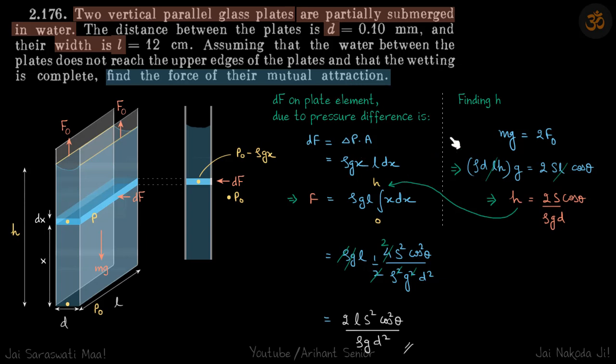But our approach in that case will also be the same. If you go down in that mercury column, you will get a pressure at a given distance x and you can find the small force df just like what we are going to do here.